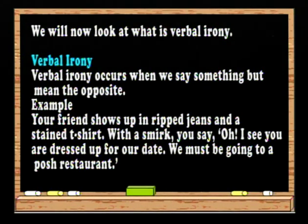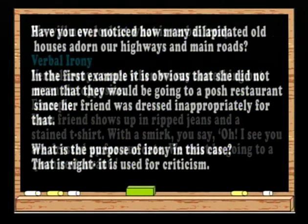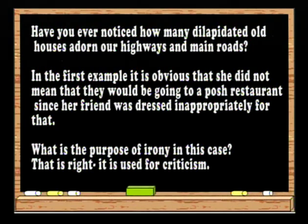We will now look at what is verbal irony. Verbal irony occurs when we say something but mean the opposite. For example, your friend shows up in ripped jeans and a stained t-shirt. With a smirk you say, 'Oh, I see you're dressed up for a date. We must be going to a posh restaurant.'